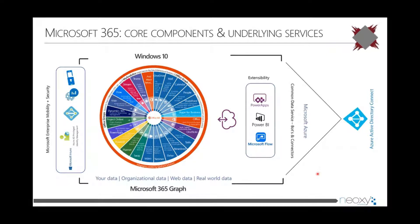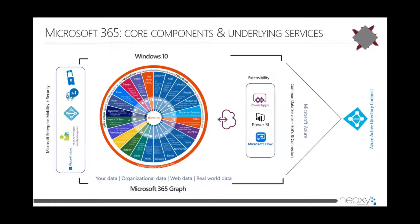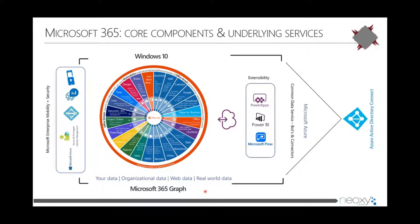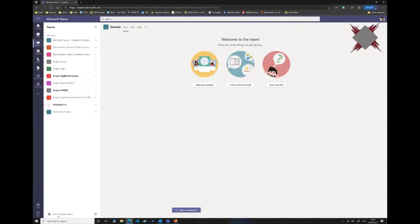Microsoft is moving away from Office 365 to Microsoft 365, which is a combination of Office 365, Windows 10 as a service, and Enterprise Mobility and Security. Teams is only a small part of that wheel — you also have security, Windows 10, extensibility with Power Apps, Power BI, and Flow, all connected to Azure and the Microsoft Graph. Teams is part of M365, but not 100% of it.